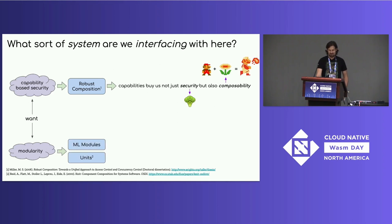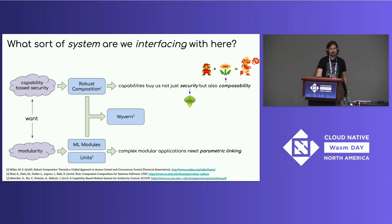We also did research in the modularity direction around the ML module system and the work on units. The high-level takeaway is that complex modular applications need what I'm going to call parametric linking, which I'll talk more about later. And then combining these was a bit of research on the WIVERN language, which nicely illustrated how capabilities can go really well with parametric linking.